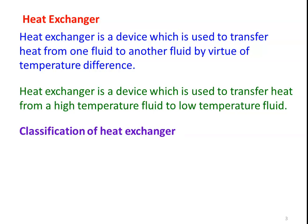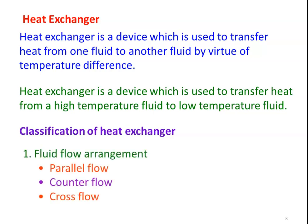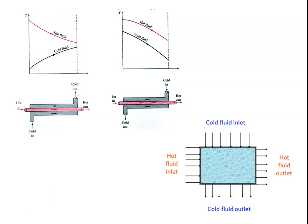How do we classify heat exchangers? We group them into different categories. The first category is based on the type of fluid flow arrangement. The heat exchanger may be a parallel flow heat exchanger, counter flow heat exchanger, or cross flow heat exchanger based on the fluid flow arrangement. The first diagram is the parallel flow, the second is the counter flow, and the third is the cross flow heat exchanger.